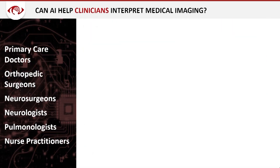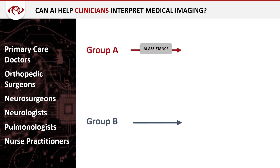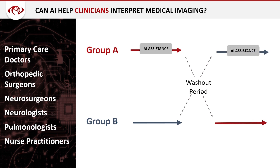Scientifically, we take primary care doctors, surgeons, even nurse practitioners, and randomize them into two groups — one gets AI assistance, one does not. We have them go through imaging studies, do a washout period, then switch the groups. This is a classic crossover control trial setup, so they provide their own internal control.